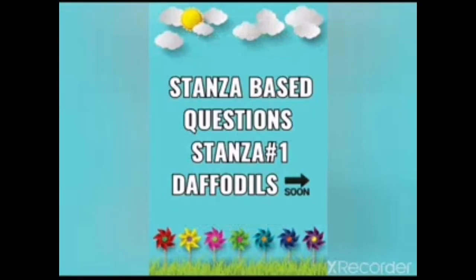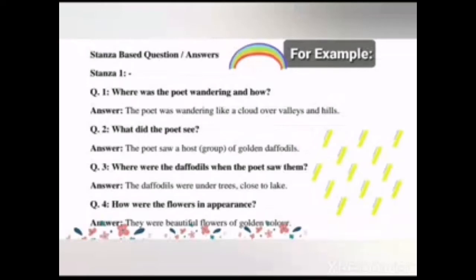Stanza-based question number one from the poem daffodils. Here is an example: Question 1, where was the poet wandering and how? Answer: The poet was wandering like a cloud over valleys and hills. Question 2, what did the poet see? Answer: The poet saw a host of golden daffodils.